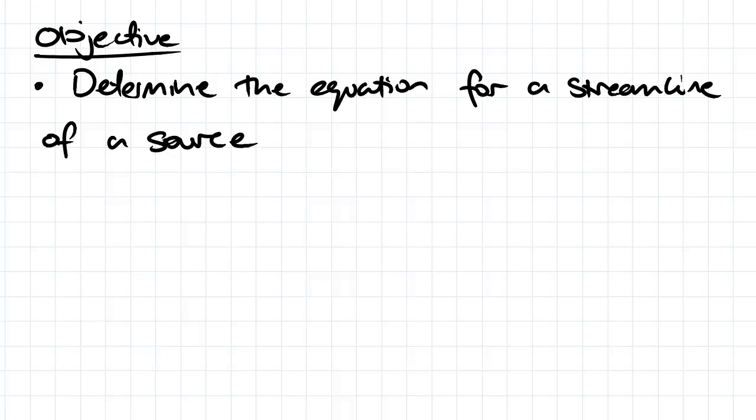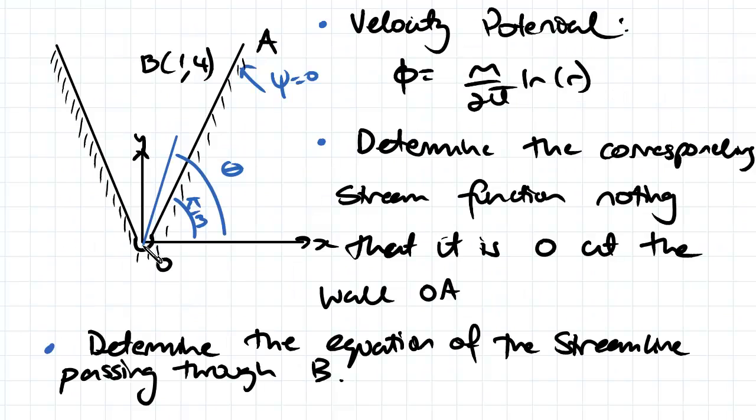Hey guys, the objective for this video is to determine the equation for a streamline of a source. Looking at the question here, we've got our source here and we've got streamlines emanating radially from this point. It's surrounded by walls here, we've got our wall OA and a second wall here.